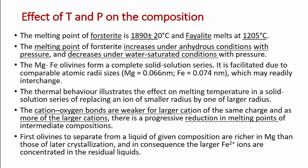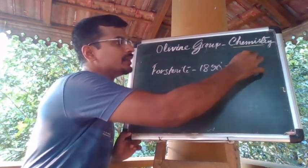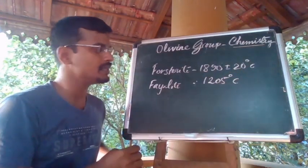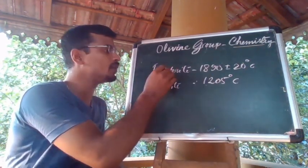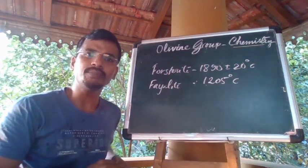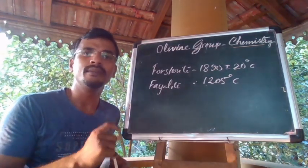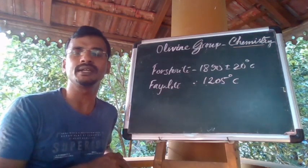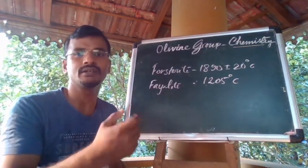Now let us discuss about the effect of temperature and pressure on the composition of the olivine group of minerals. The melting point of forsterite is 1890 ± 20 degrees Celsius, whereas the melting point of fayalite is about 1205 degrees Celsius. So the melting point of the iron-rich end-member is considerably lower than the melting point of the magnesium-rich end-member, forsterite. The melting point of forsterite increases under anhydrous conditions with pressure, and the melting point decreases under water-saturated conditions with pressure.